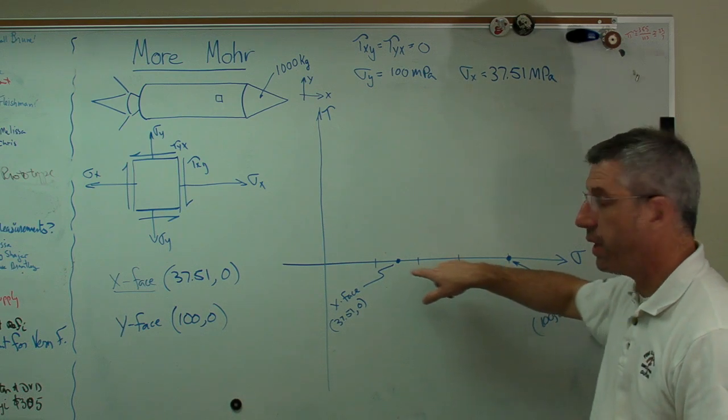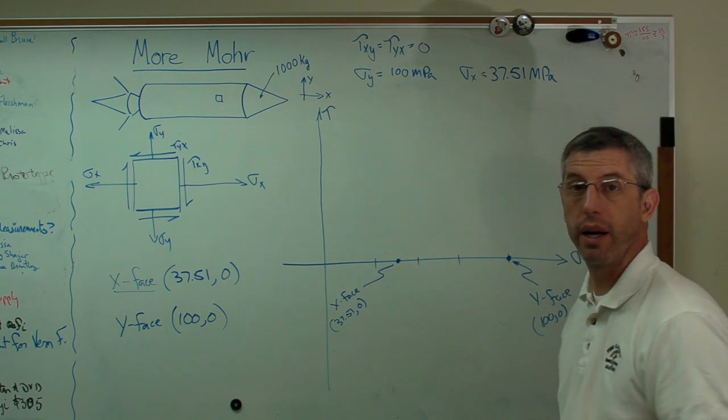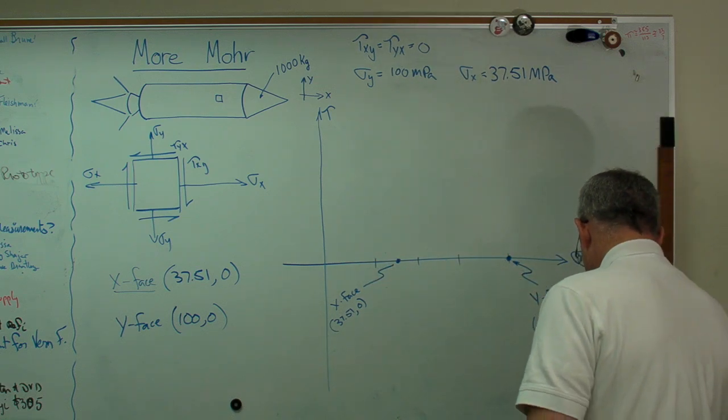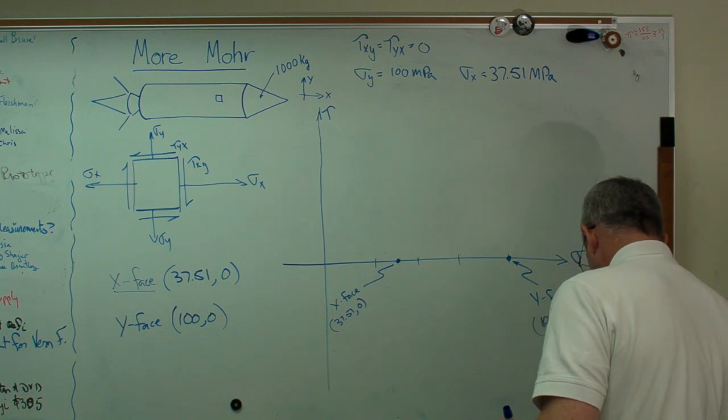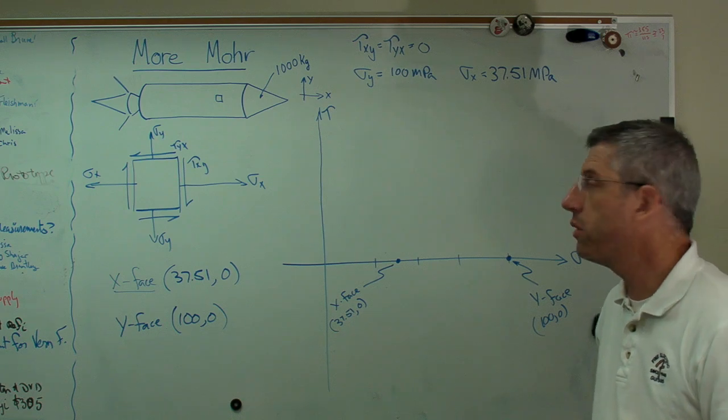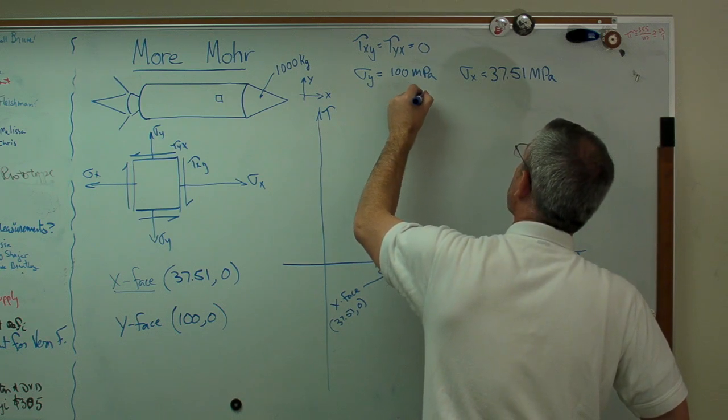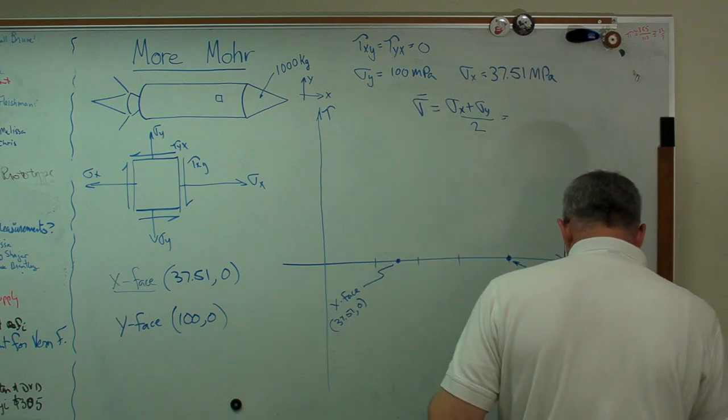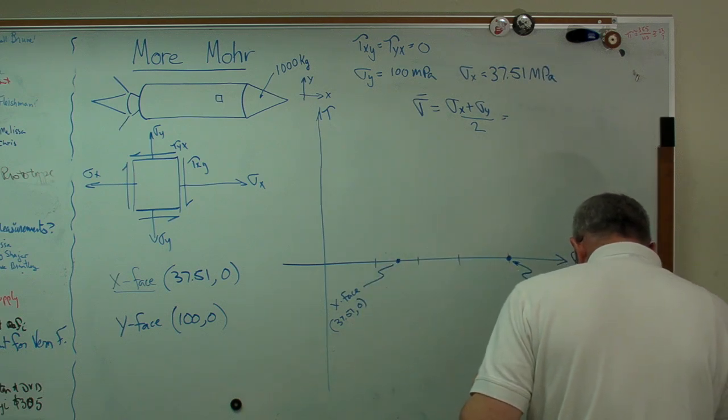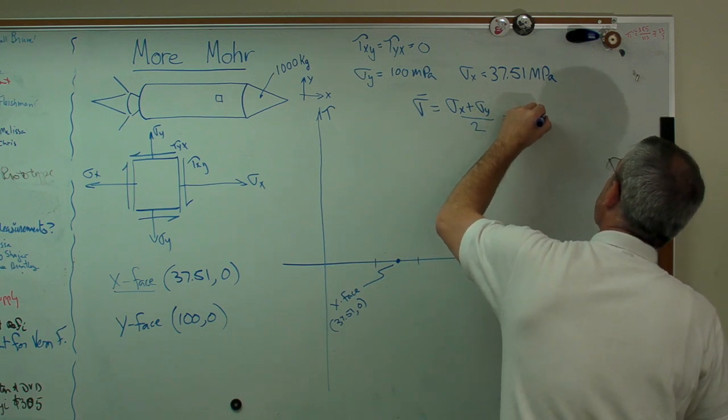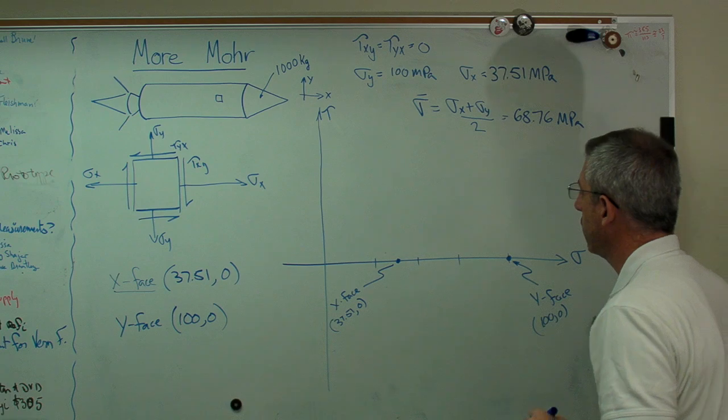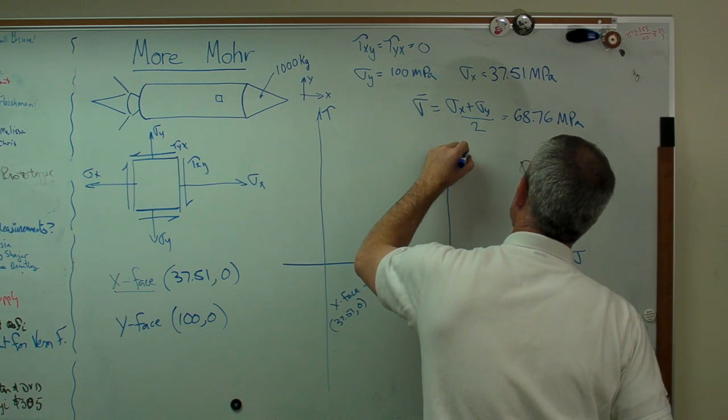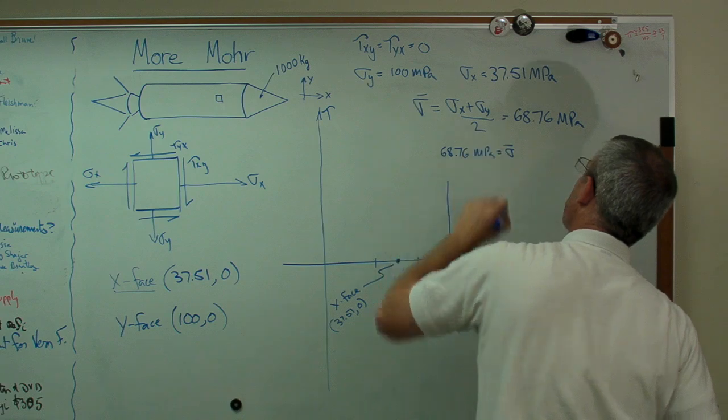Since tau xy and tau yx are 0, these points both lie on the horizontal axis here, on the normal stress axis. Next thing I need to do is find the mean stress. So, sigma bar is sigma x plus sigma y over 2. So, it's 137.51 over 2, and that comes to 68.76 megapascals, which is going to be right about there. 68.76 MPa equals sigma bar.